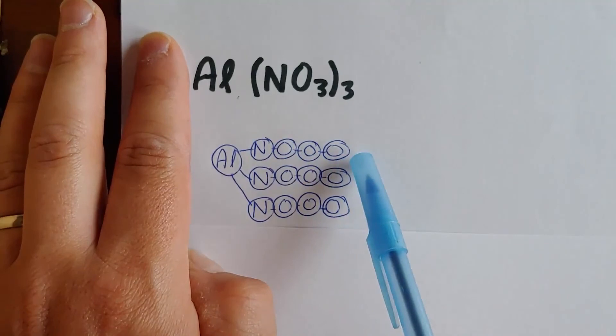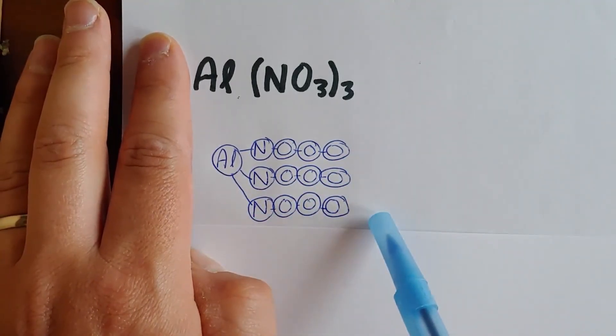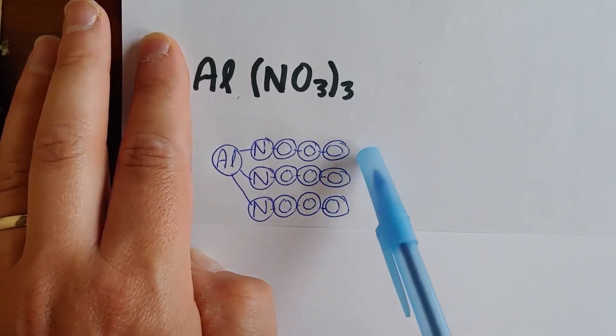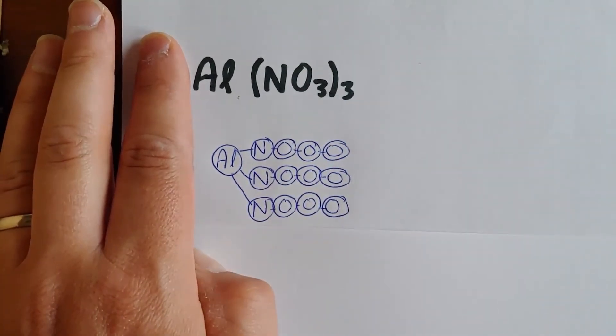So your molecule should look something like this. We have an Al. Here's our first group of NO3, our second group of NO3, and our third group of NO3. Remember, this subscript here tells you how many of those polyatomic ions you need in the compound. And this is all one giant molecule. So you have to make sure that your circles are connected.